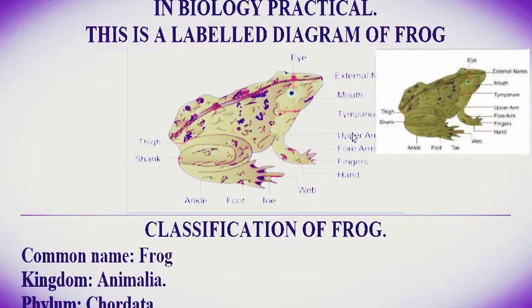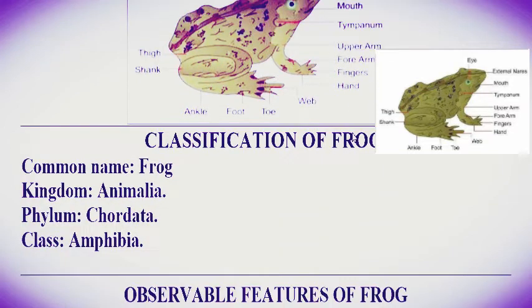Classification of frog: the common name is frog. Kingdom: it belongs to Animalia. Phylum: it belongs to Chordata. Class: it belongs to Amphibia.